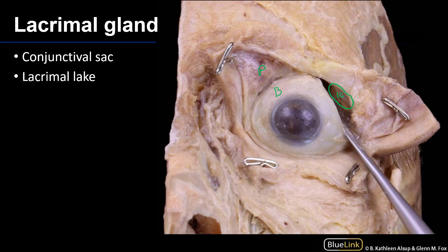Those tears move across the surface of the eye towards the medial canthus of the eye. We can see that medial canthus here, and there is a region there called the lacrimal lake. That lacrimal lake is really a space bounded by the medial canthus.